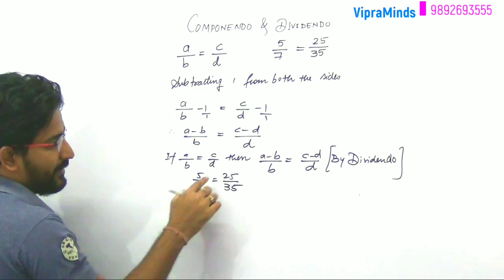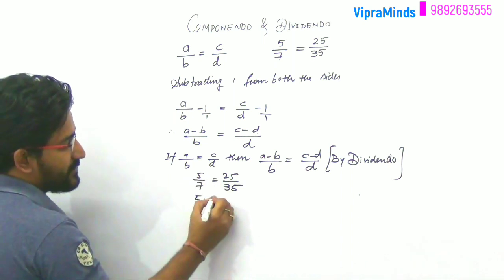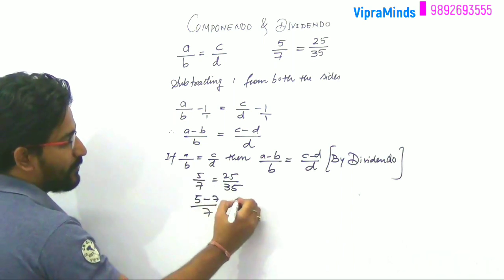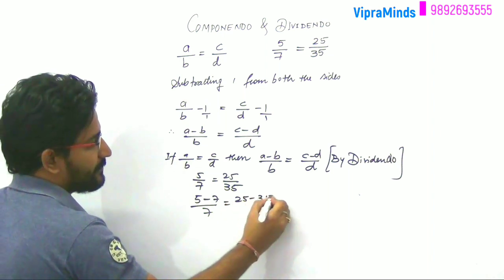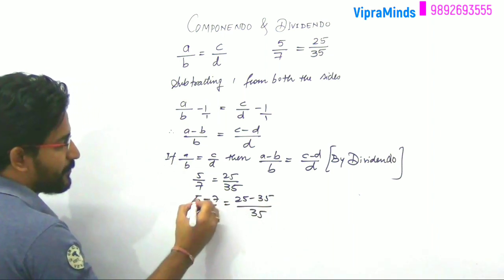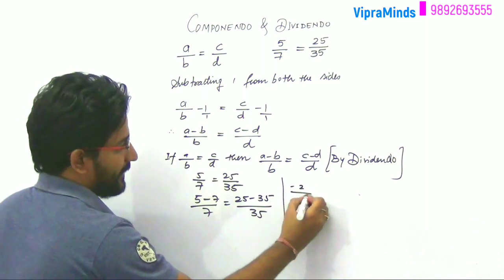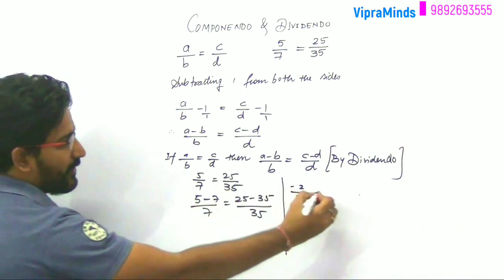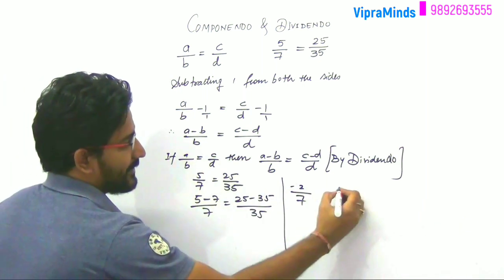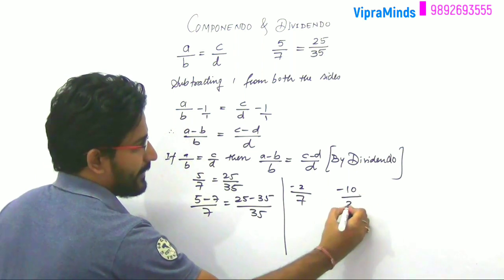This is a, b, c, d. So a minus b, that is 5 minus 7 by 7 equals 25 minus 35 by 35. What are you going to get? 5 minus 7, that is minus 2 by 7. And यहां देखते, 25 minus 35 is minus 10 by 35.